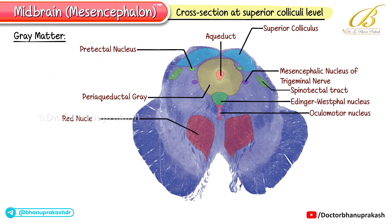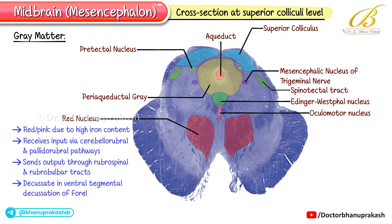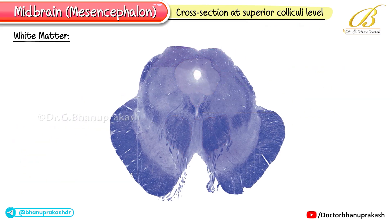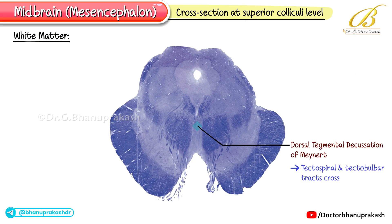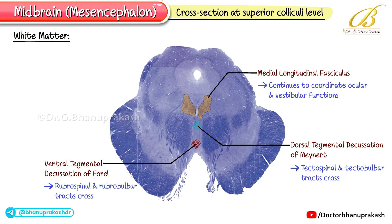The red nucleus, characteristically red-pink due to high iron content, receives input via cerebellorubral and pallidorubral pathways and sends output through the rubrospinal and rubrobulbar tracts. These fibers decussate in the ventral tegmental decussation of Forel. The white matter at this level includes: the dorsal tegmental decussation of Meynert, where tectospinal and tectobulbar tracts cross; the ventral tegmental decussation of Forel, where rubrospinal and rubrobulbar tracts cross; the medial longitudinal fasciculus (MLF), which continues to coordinate ocular and vestibular functions; and the lemnisci, most of which remain, though the lateral lemniscus (auditory) is less prominent at the superior level compared to the inferior colliculus level.